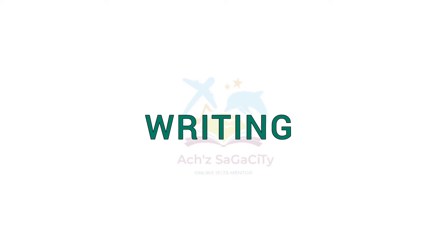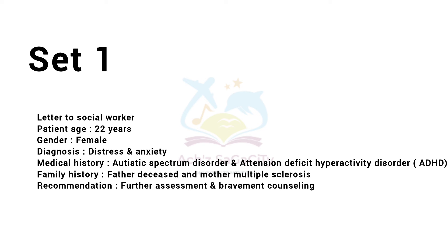Now we will move on to the writing module. The first set was a letter to a social worker. The patient age was 22 years, gender female, diagnosis was distress and anxiety. Medical history: autistic spectrum disorder and attention deficit hyperactivity disorder (ADHD). Family history: father deceased and mother with multiple sclerosis. Recommendation for further assessment, treatment, and counseling — we need to recommend the patient to the social worker.